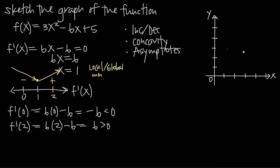To find where the function is concave up and concave down, we need to take the second derivative in order to find inflection points. Critical points are where the function changes direction from increasing to decreasing or vice versa. Inflection points are where the function changes concavity — from concave up to concave down, or vice versa. To find inflection points, we take the second derivative.